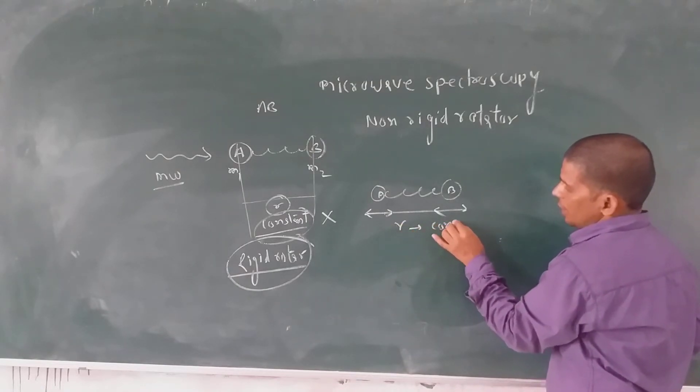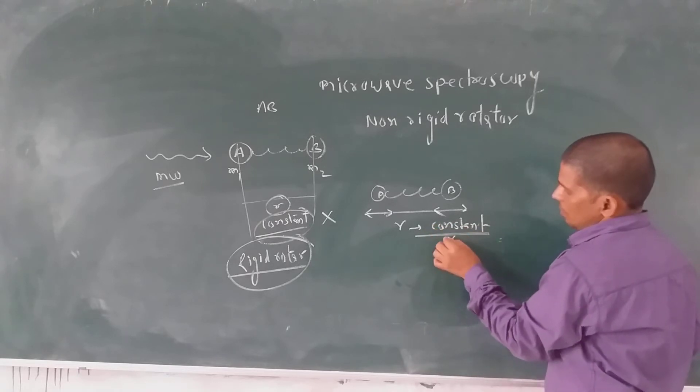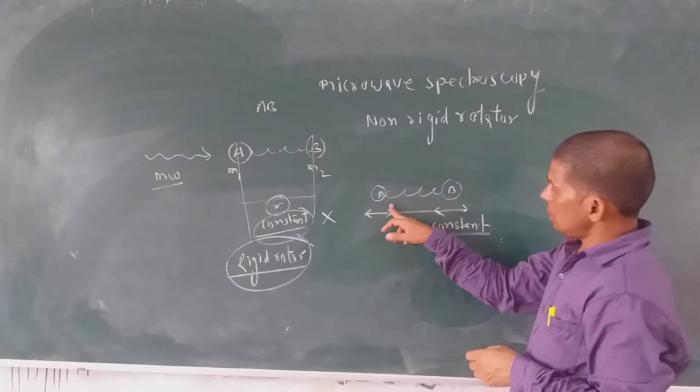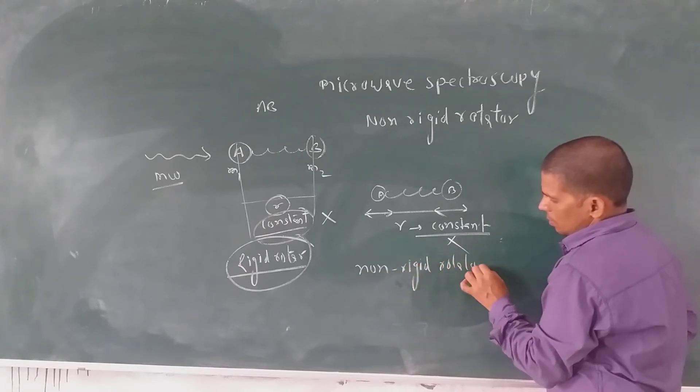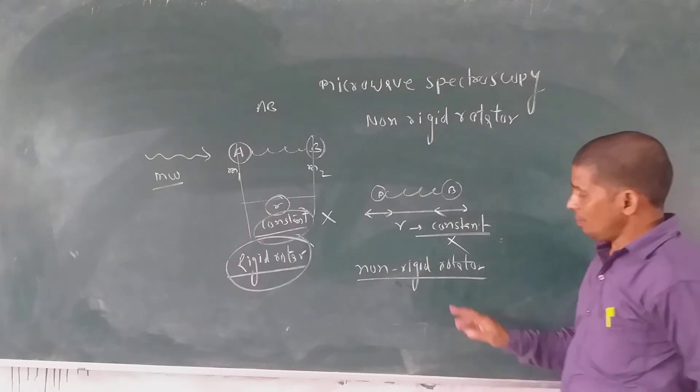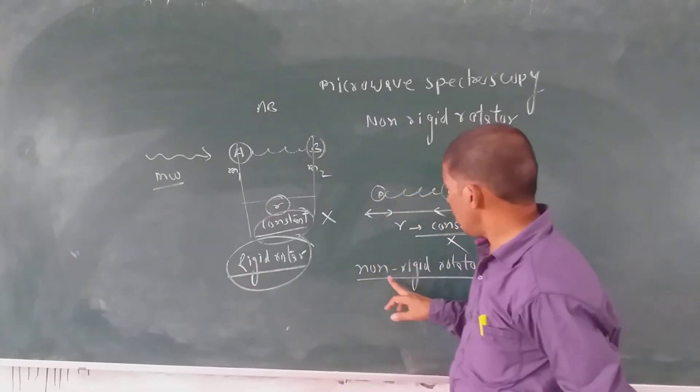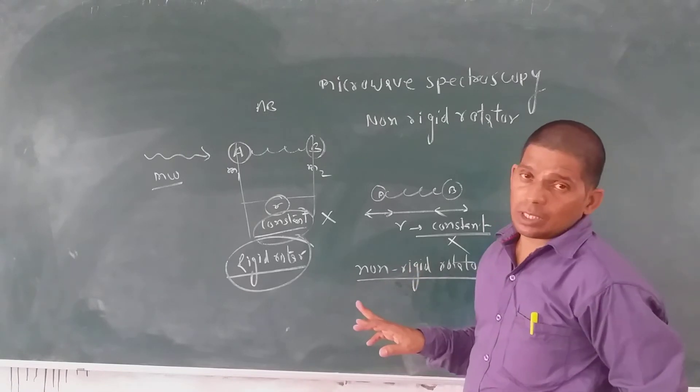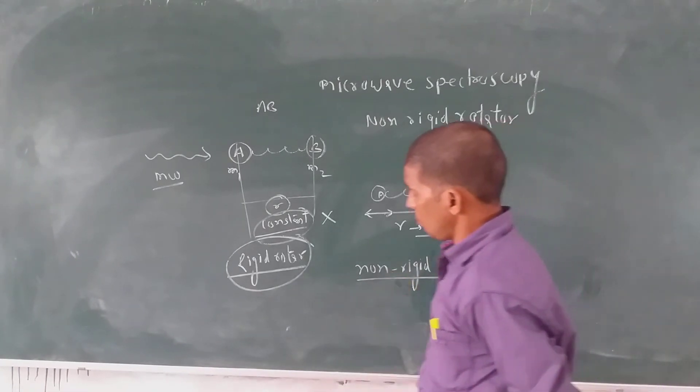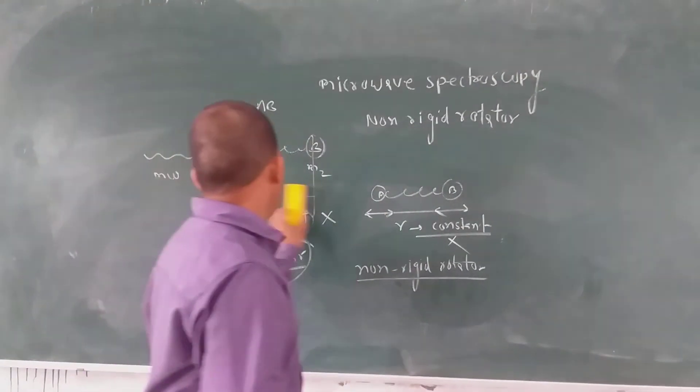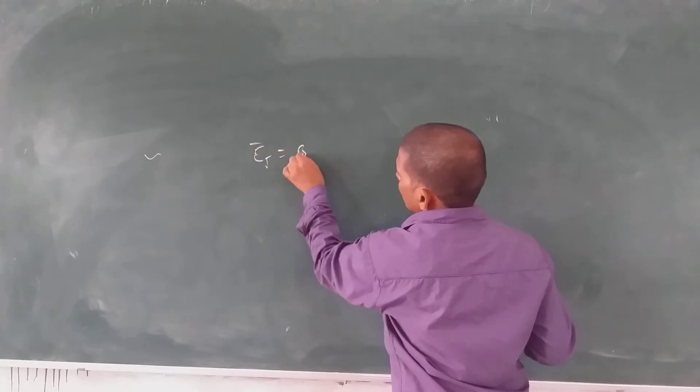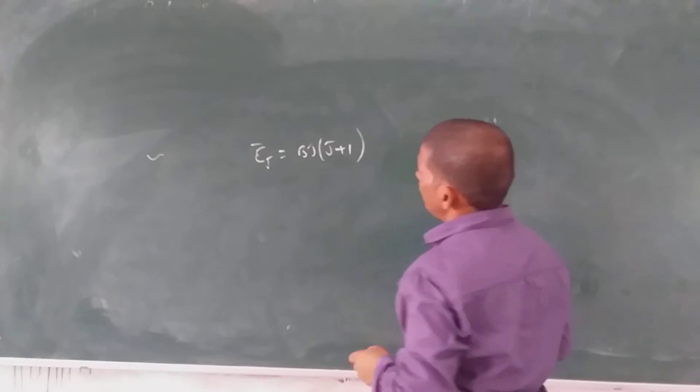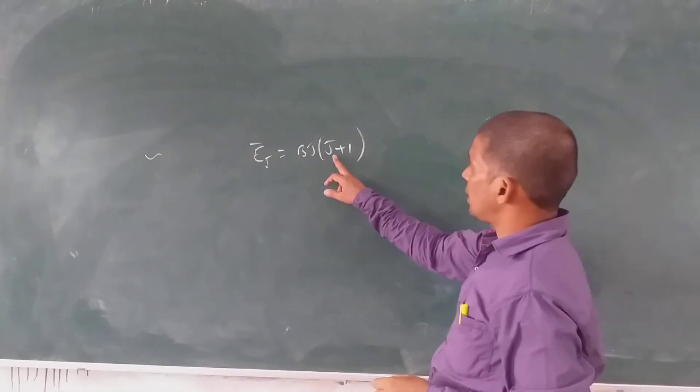If R is not constant, then this diatomic molecule is non-rigid. So children, today we are seeing what happens when R is not constant and the effect of R not being constant.